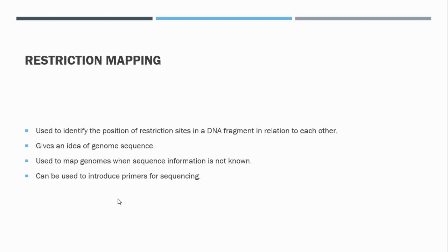This concludes the lecture on restriction mapping and introduces the concepts needed for molecular cloning. While restriction mapping is not as commonly used today because of DNA sequencing, we still use restriction enzymes in molecular cloning — for example, to cut a circular DNA fragment so that we can ligate additional fragments of DNA into it. We'll cover these concepts when we discuss molecular cloning next week. Thank you.